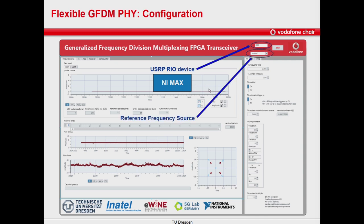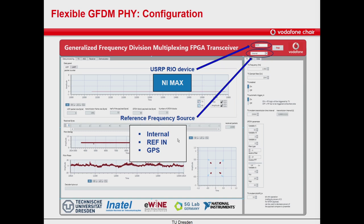We also need to configure the reference frequency source. Each USRP needs a reference frequency of 10 MHz to derive its clocks. We need to select this source among: internal, if the USRP uses an internal reference clock; REF-IN, if this reference is taken from the REF-IN port; or GPS, if we are using a GPS device for more accuracy.